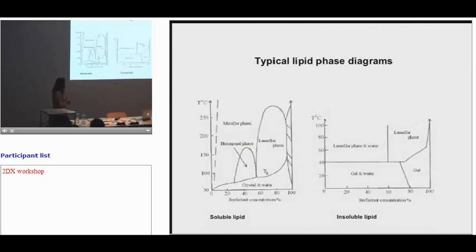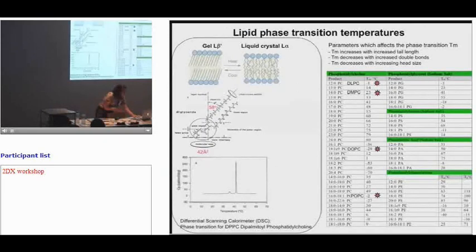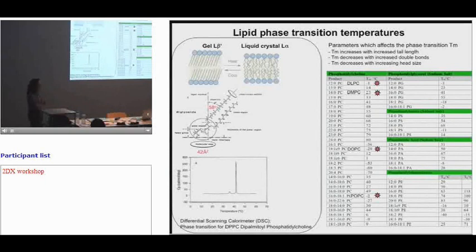Sometimes very complicated phase diagrams can be drawn describing the various phases of lipids. Regarding lipid phase transition: this is quite important because at certain temperatures, lipids go from a gel phase to a liquid crystal phase. In the gel phase, the lipid is extremely viscous. In the liquid crystal phase, the lipid is very mobile in the bilayer, the thickness decreases, and the area per molecule increases significantly.